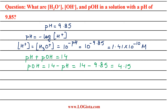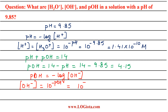Next is the calculation of [OH⁻]. Just as pH = -log[H⁺], similarly pOH = -log[OH⁻]. So [OH⁻] = 10 raised to the power of minus pOH. Putting in the value of pOH, we get 10 raised to the power of minus 4.15, and on calculating this we get 7.08 × 10⁻⁵ molar. This is the concentration of OH⁻.